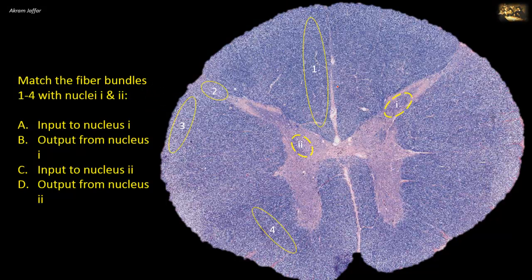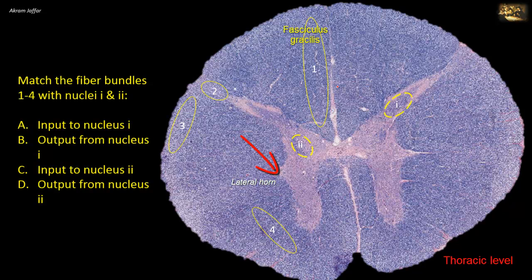Match the fiber bundles one to four with the nuclei one and two. First, let's identify the white matter tracts. One is located in the dorsal funiculus on the medial side — it is the fasciculus gracilis. Note this is a thoracic level, indicated by the presence of a lateral horn and a narrow anterior horn with no lateral extension for limb innervation. At mid-thoracic level and above, both fasciculus gracilis and fasciculus cuneatus are present in the posterior funiculus.